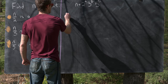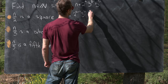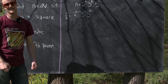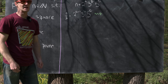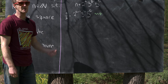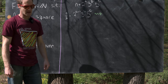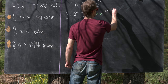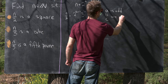Now, n over two is going to equal two to the a minus one, times three to the b, times five to the c. We're just dividing out one power of two. For this to be a perfect square, the parity of a minus one, b, and c tells us that all these exponents must be even. So a minus one must be even, which means a is odd. And then b and c are both even.